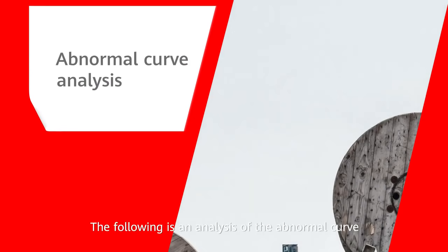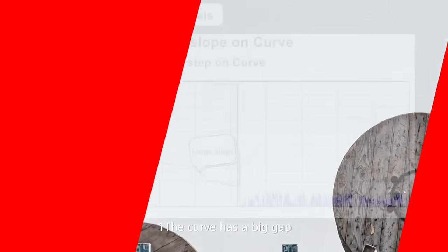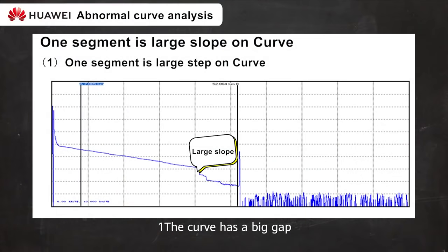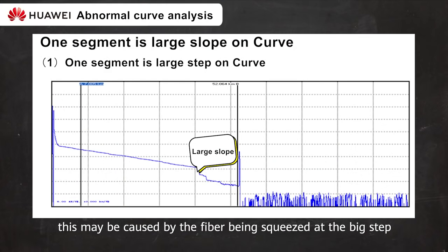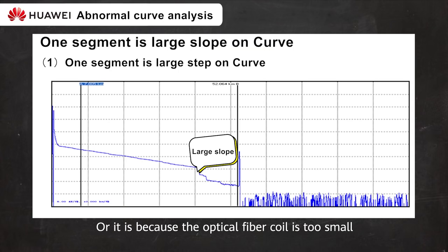The following is an analysis of the abnormal curve. 1. The curve has a big gap. This may be caused by the fiber being squeezed at the big step or the optical fiber coil is too small or the fusion splicing quality is poor.